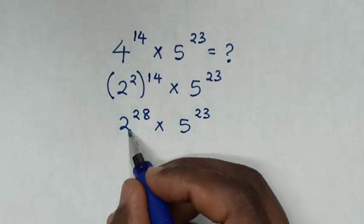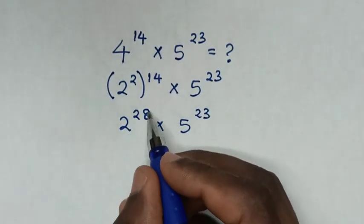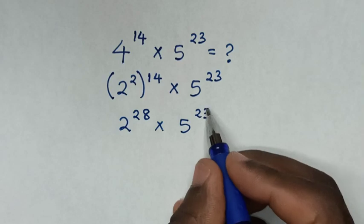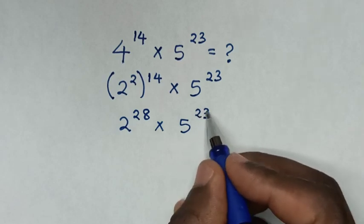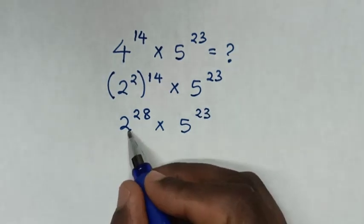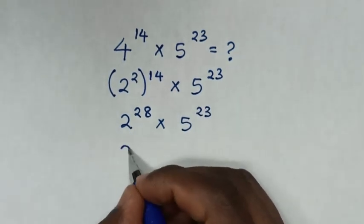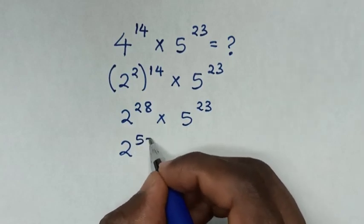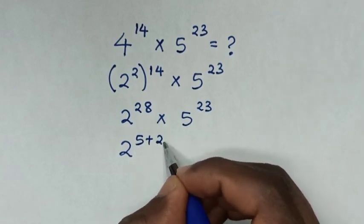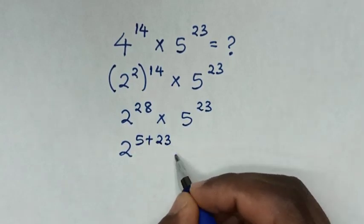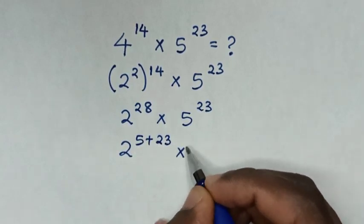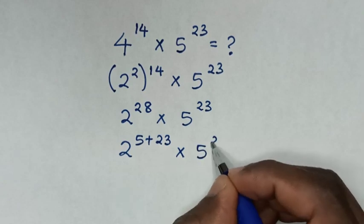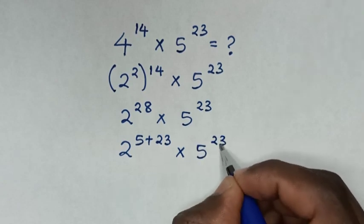Then, in this exponent, we make the power of 28 have a common power of 23. So here, 2 to the power of 28 is the same as 2 to the power of 5 plus 23, then times 5 to the power of 23.